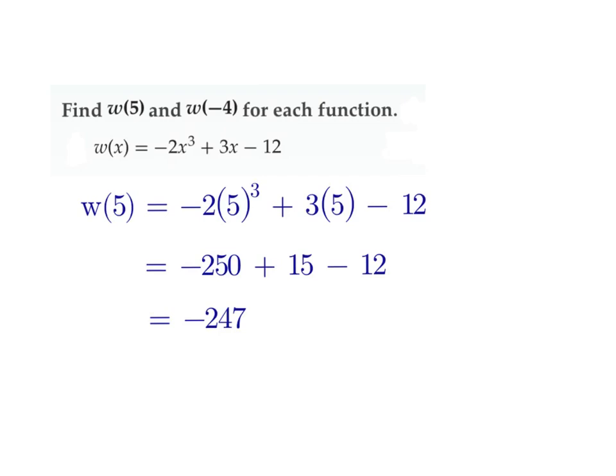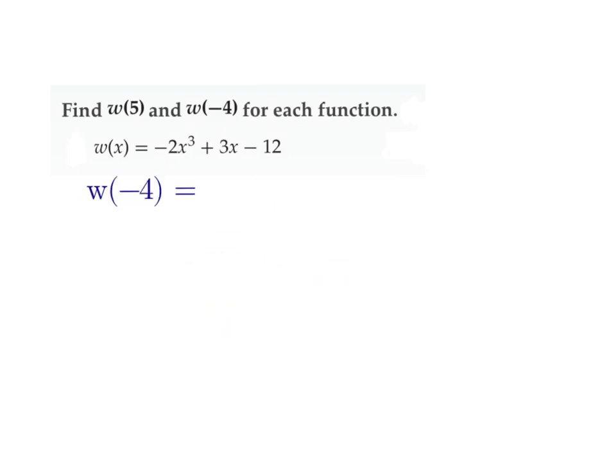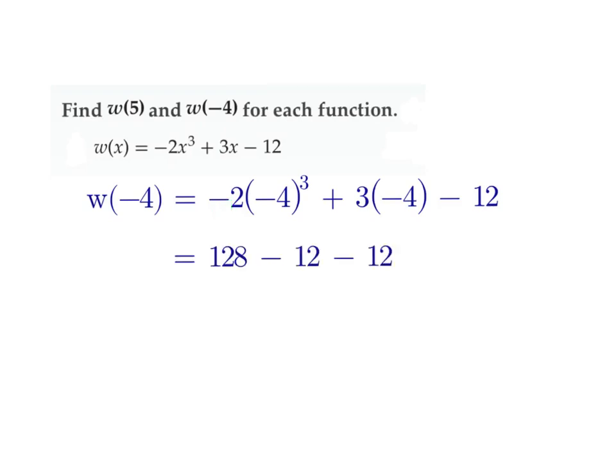All right, do the same thing for f of -4. See what you get there. I need, like I said, I like to put what I'm plugging in in its own set of parentheses. What's interesting in this case, -4 to the third gives me -64. So -64 times -2 is going to give me positive 128. So now my answer is going to end up being a positive instead of a negative. So this plus 3 times -4 gives me -12, and so 128 - 12 - 12 is just 104.